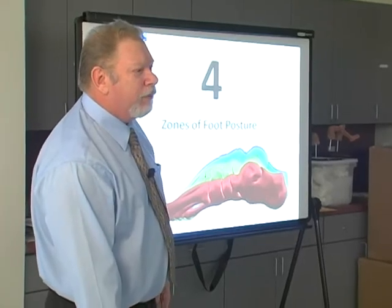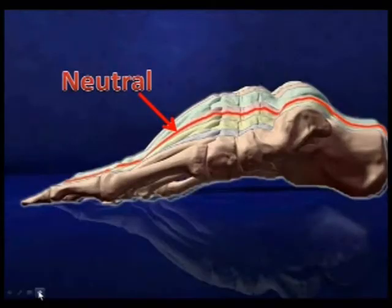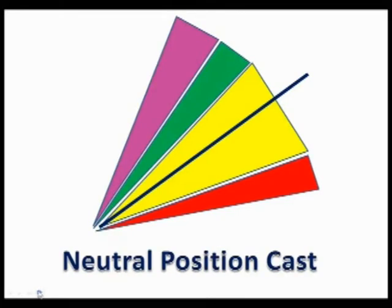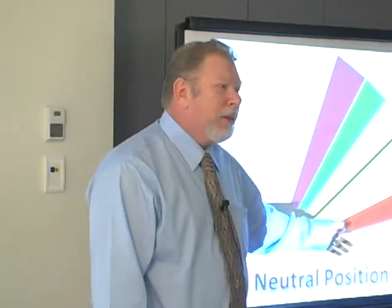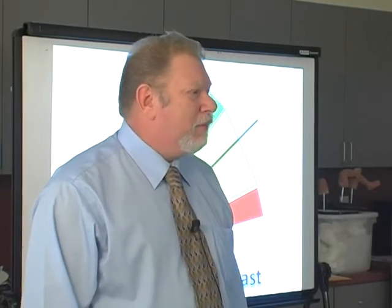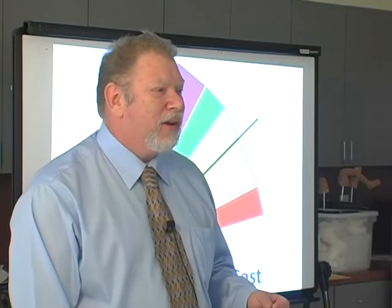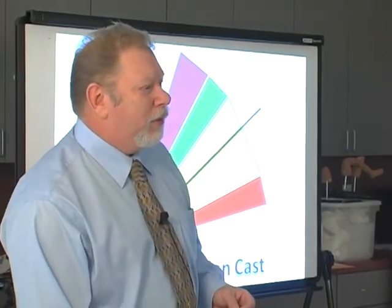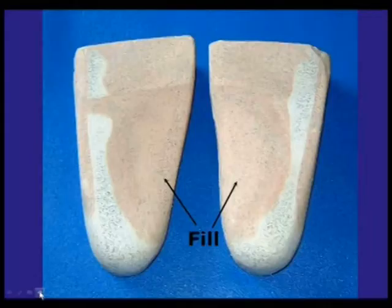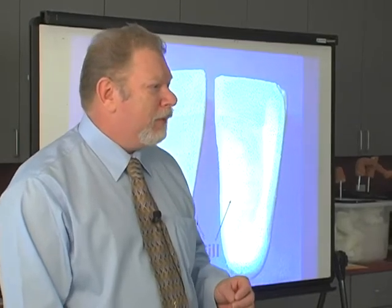Where is neutral? Neutral happens to be right in the dysfunctional zone. So if you made an orthotic in neutral, you know what would happen — you would end up sending it back as a warranty. The labs don't like warranties. So how do they solve that problem? What the labs do is fill in the arches. But what is the science behind arch fill?